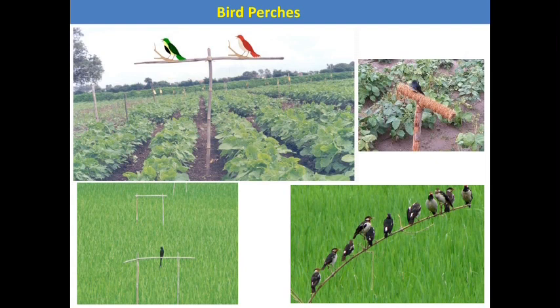The last cultural practice is bird perches. Birds are mostly carnivorous animals that help check the caterpillar population in the field. Sticks are buried into the soil standing about two meters above the crop level. Birds perch on these sticks and pick up the larvae present in the main crop, helping to reduce the pest population and reduce yield losses in that particular crop.